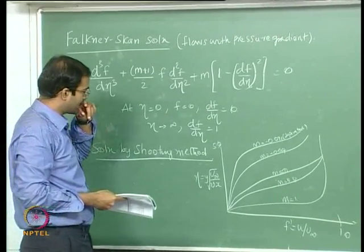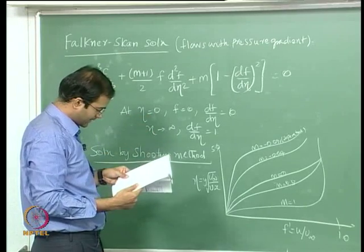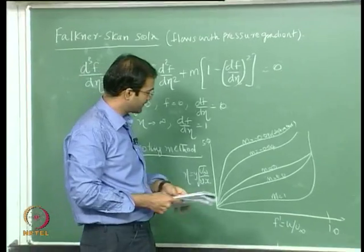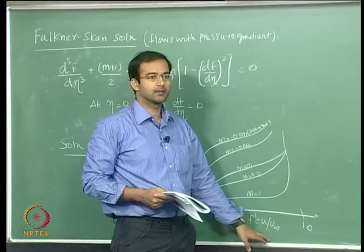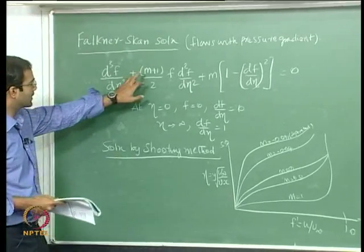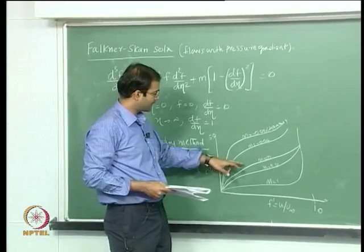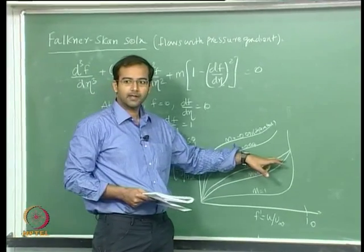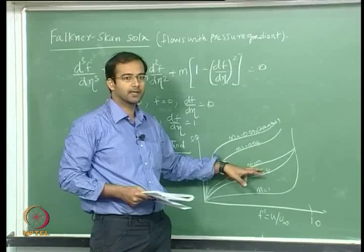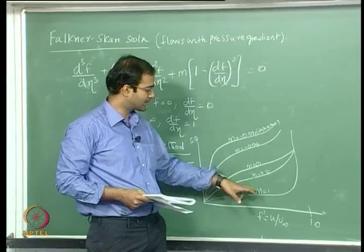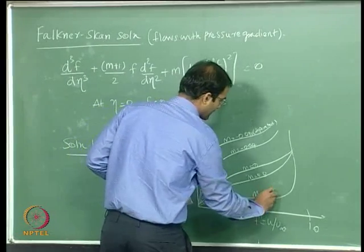These are some of the velocity profiles obtained by solving the ODE with the shooting technique. I am plotting η on the y-axis and F prime, which is the non-dimensional velocity, on the x-axis. For each value of M, I can solve the ODE by shooting method and plot the profiles. For M equal to 0, this is the flat plate case and you get a profile exactly similar to the Blasius profile. For M equal to 1, this is the stagnation point flow.